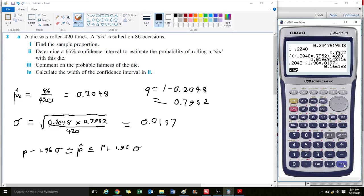We have 0.167 is less than or equal to P, which is less than or equal to 0.243 when we change the minus to plus.